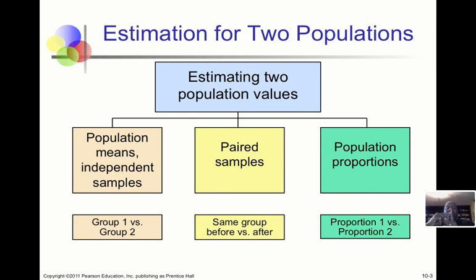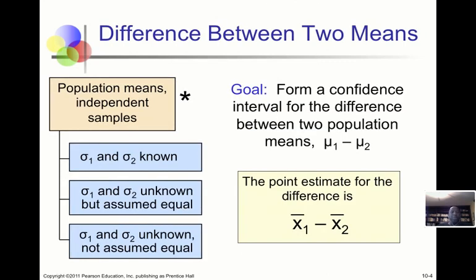We also refer to these as dependent samples or repeated measures — one person gives you a measure before, and then repeats the measure after. That's a particular kind of model design used in statistics that's quite useful. And of course, we're also dealing with population proportions as well.